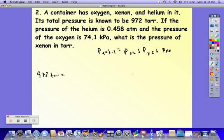Total pressure was 972 and it was given in Torr, so we didn't have to convert that. The pressure of helium is 0.458 ATM, so that does need to be converted. Yesterday we talked about converting pressures. Remember, 1 goes with ATM, 760 goes with Torr. By multiplying, we get 348 Torr. This can now go back to our main equation.